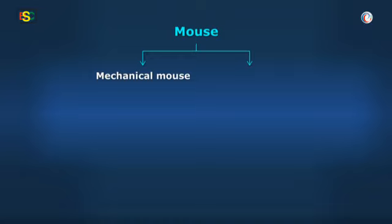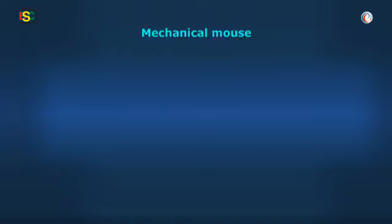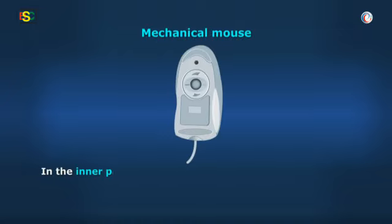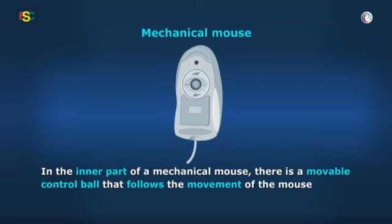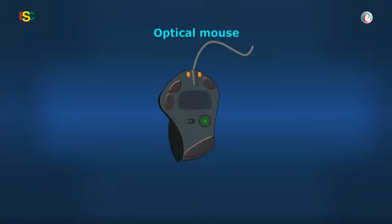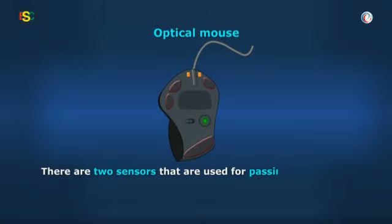Mechanical mouse and optical mouse. What is the difference, Baba? Vidya, in the inner part of the mechanical mouse, there is a movable control ball that follows the movement of the mouse. But in the optical mouse, there are two sensors that are used for passing signals and acting on it. Got it, Vidya? Yes, Baba.